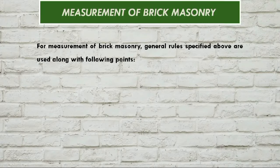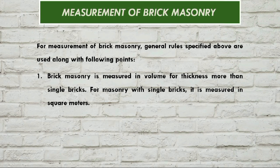Measurement of brick masonry — general rules. Brick masonry is generally measured in volume for thickness more than a single brick, meaning 9 inches and above, and we consider it in cubic meters. For a single brick thickness, we consider it in square meters. If it is 9 inches, we use cubic meters; if it is 4 inches, we use square meters.